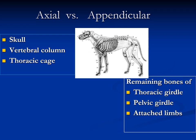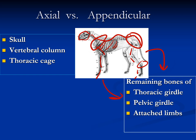As I said, we have the axial and appendicular skeleton. The axial consists of the skull, vertebral column, and bony thorax. The appendicular consists of the thoracic girdle and pelvic girdle with their attached limbs — which includes the scapula, humerus, radius, ulna, carpal, metacarpal, and phalanges for the forelimb, and the femur, tibia, fibula, tarsal, metatarsal, and phalanges for the hindlimb.